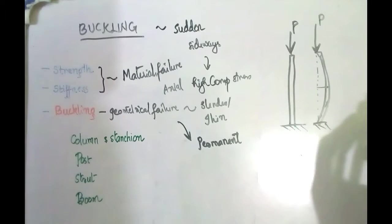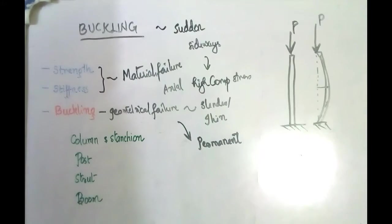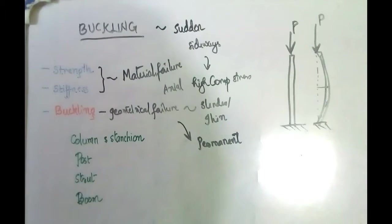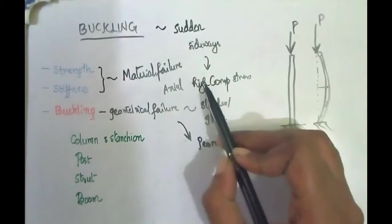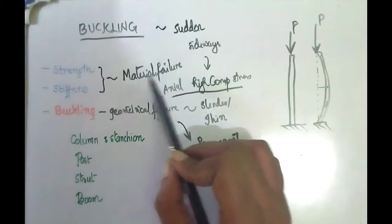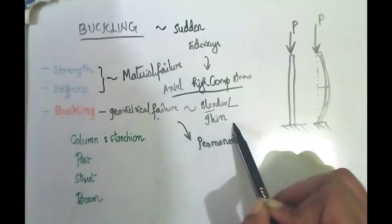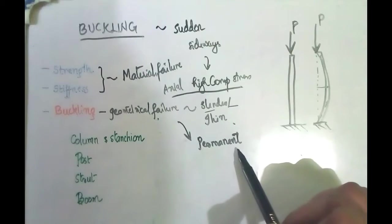The main difference between bending stress and buckling stress is this: in bending, the load induces deformation and when the load is withdrawn, the fibers have a tendency to restore — they are not permanently bent. Whereas in buckling failure mode, the fibers will be under permanent deformation. So buckling load is mainly dealt with in the case of members subjected to high axial compressive stress, and it is a geometrical failure, not a material failure. Buckling is discussed in the case of slender or thin members which finally induce permanent deformation.